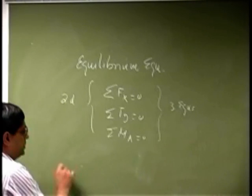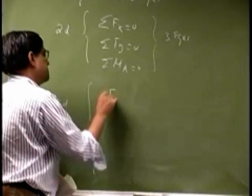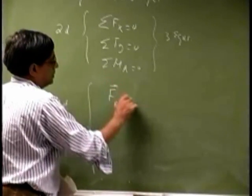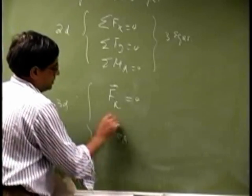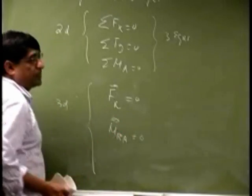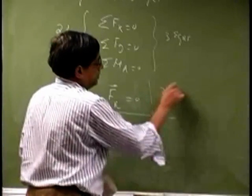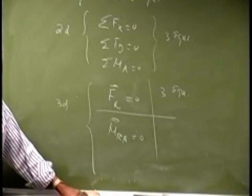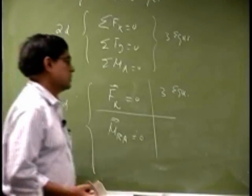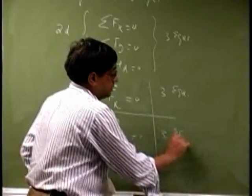Then for three dimensions, you get the resultant force that goes to zero and the resultant moment that goes to zero. The first one gives you three equations: sum of forces along X, sum of forces along Y, and sum of forces along Z. This one gives you another three equations.